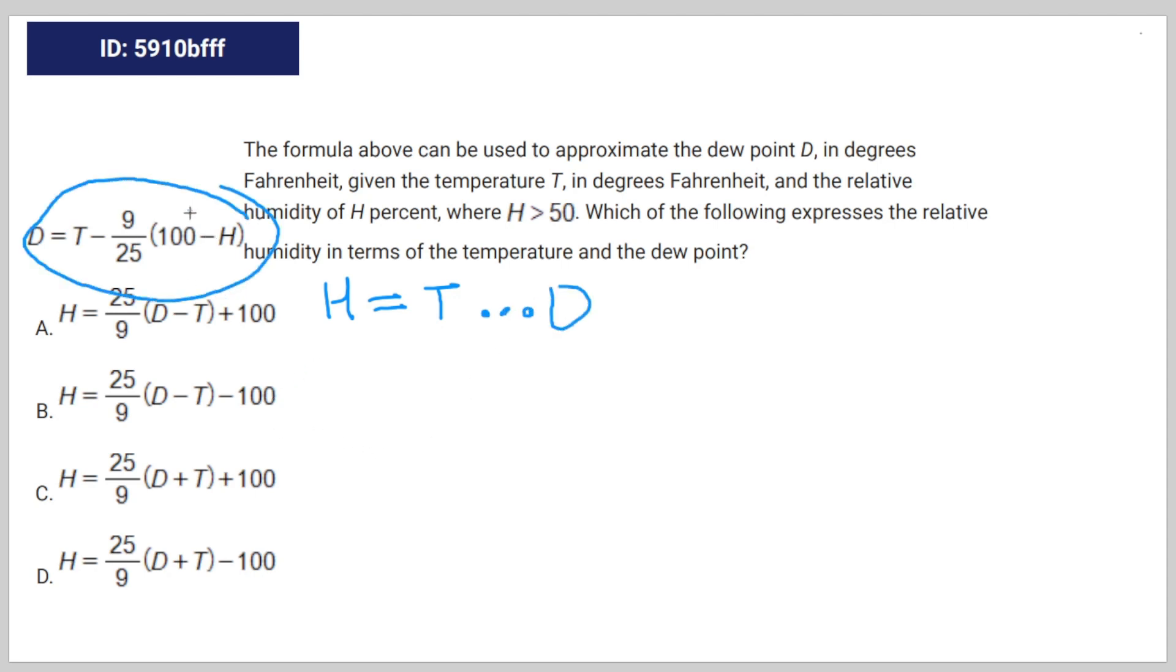So we're going to take this original equation and subtract it by T. So that's going to be negative 9 over 25 times 100 minus H is equal to D minus T.